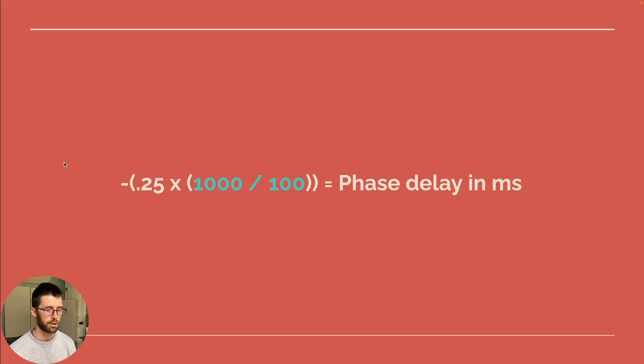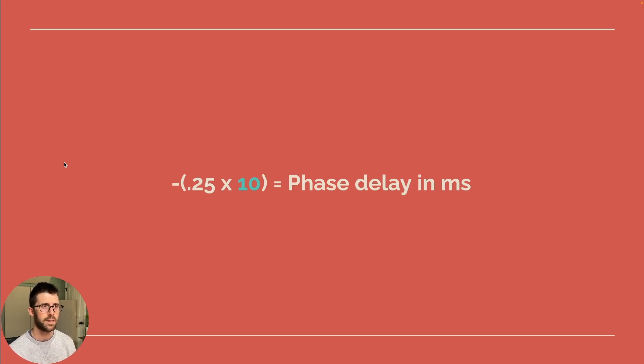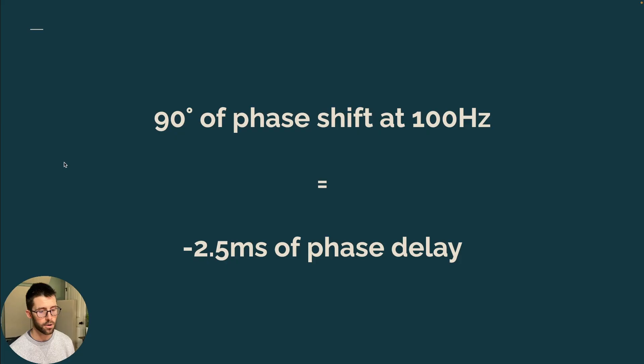I apologize for my screaming daughter out there. So I got negative 0.25 times 10. Let's continue solving that. So 0.25 times 10 is 2.5. And now let's solve the negative part. Let's apply the sign here. And now we have negative 2.5 milliseconds of phase delay at 100 hertz.